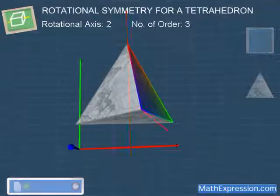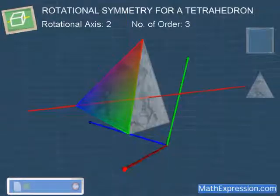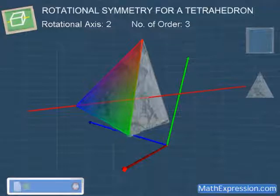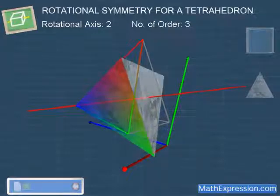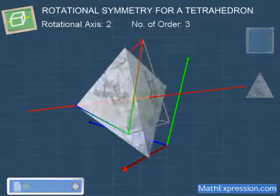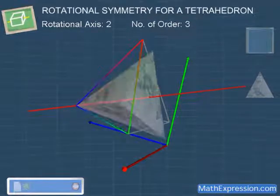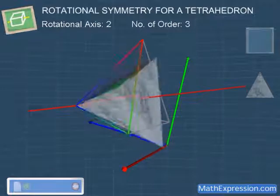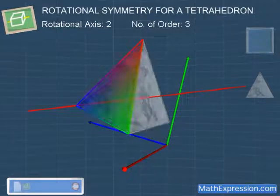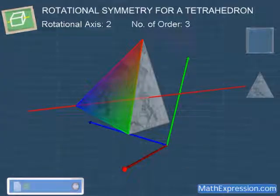This is the second axis of rotational symmetry. When we rotate the tetrahedron about this axis, we can see that the tetrahedron matches itself for 1, 2, 3 times. Hence, this axis of symmetry has order of 3.